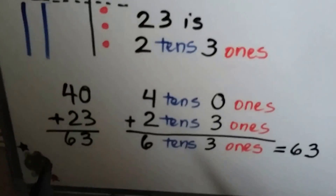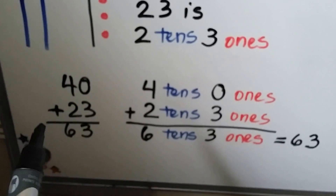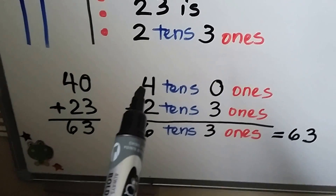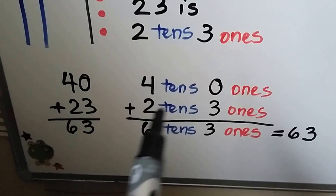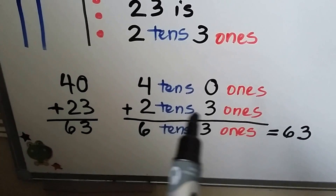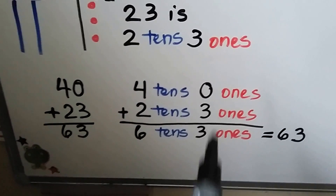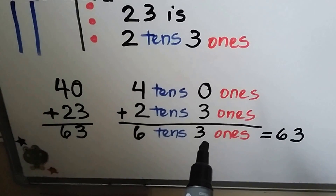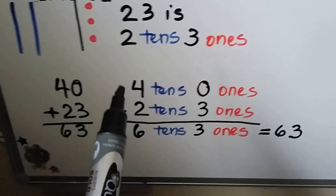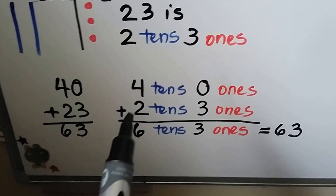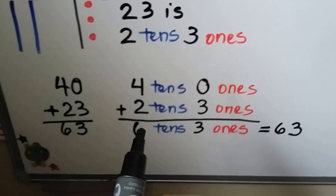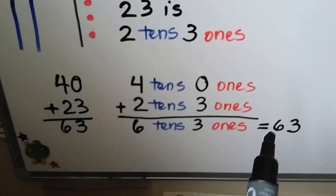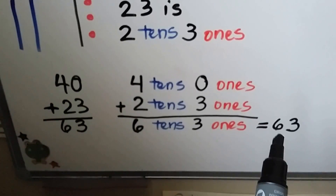We can add the 40 plus the 23. We have 4 tens and 0 ones plus 2 tens and 3 ones. We add the ones: 0 plus 3 is 3. We add the tens: 4 plus 2 is 6. We have 6 tens and 3 ones. That's equal to 63.